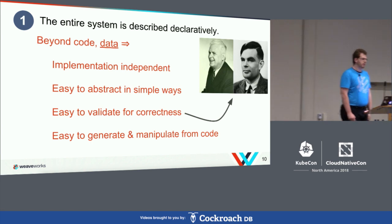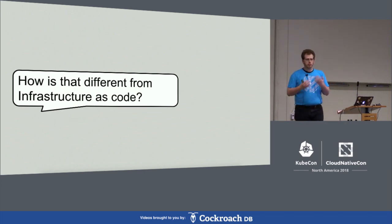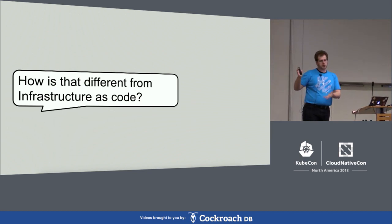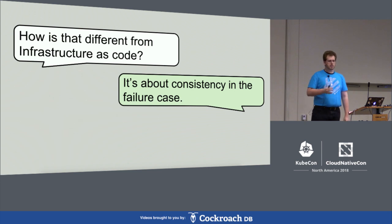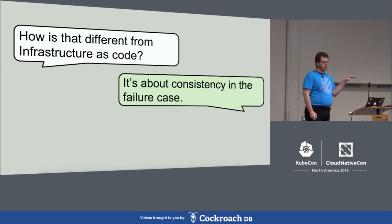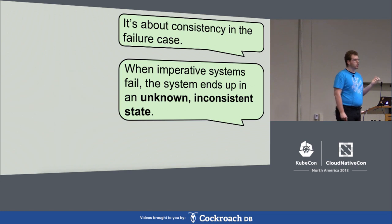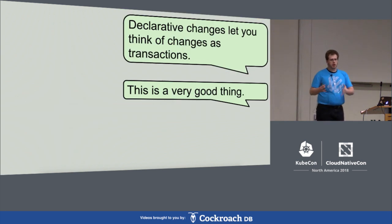How is that different from infrastructure as code? The issue is that a lot of the time people put a bunch of shell scripts in a repository and thought they had infrastructure as code — but it's not the same thing. It's about consistency of the failure case. If something goes wrong in the middle of a shell script, you end up with an inconsistent system state. Declarative definitions let you think of transitions between states as transactions, which is a very good way to think about your systems.